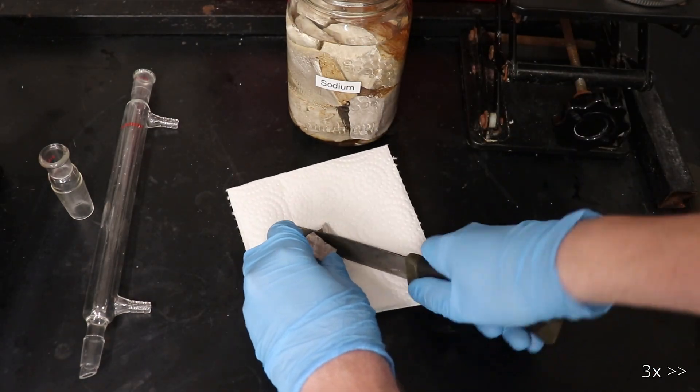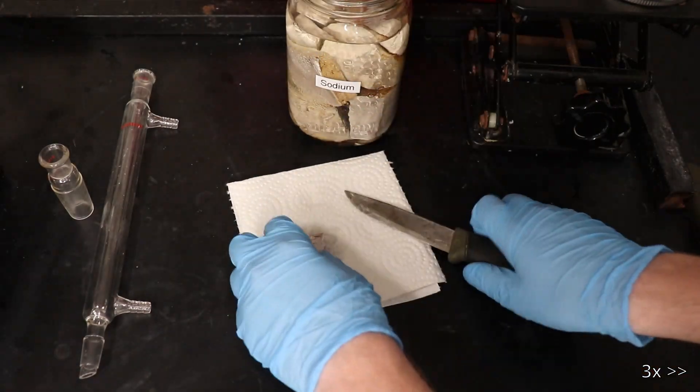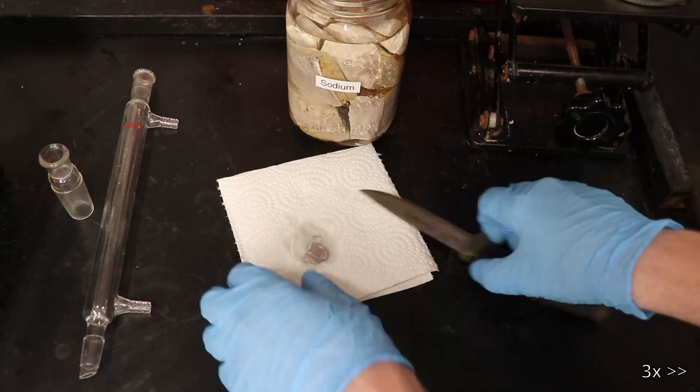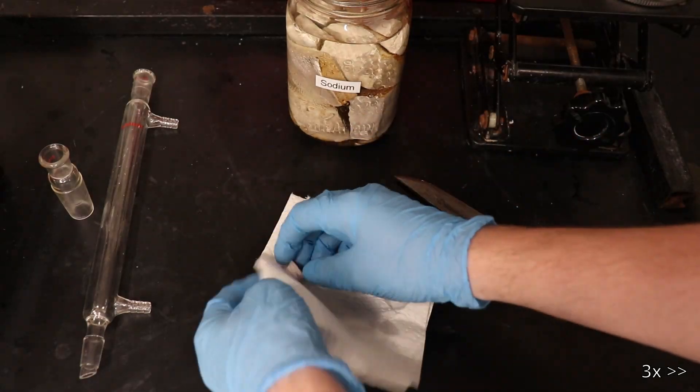To further dry the morpholine, about a one gram piece of sodium metal is chopped up into pieces and added, and was then refluxed for one hour.